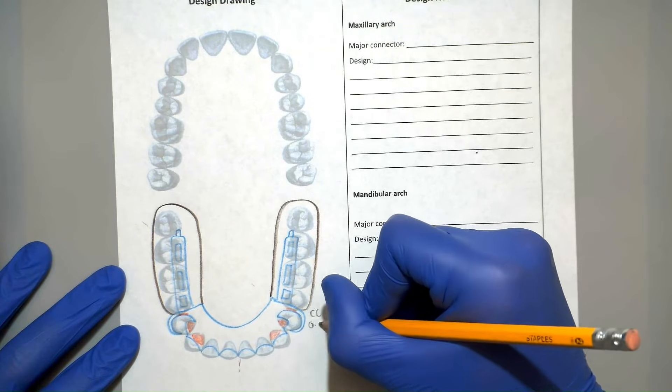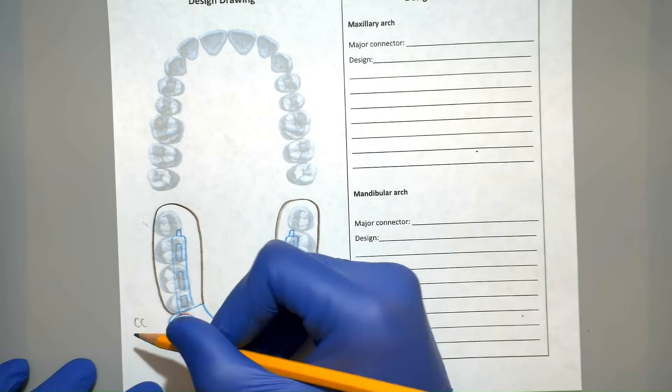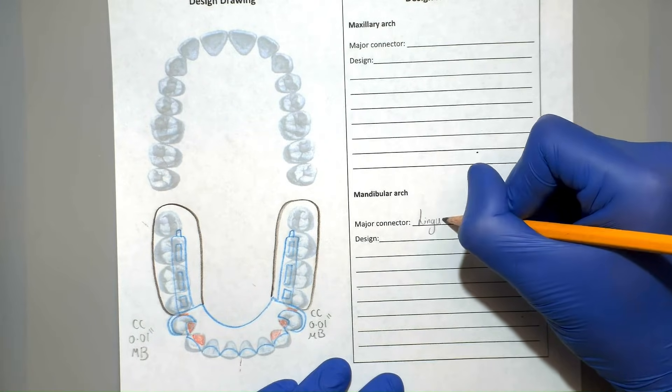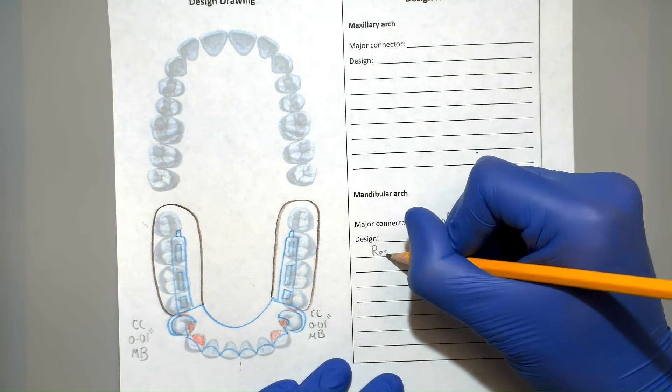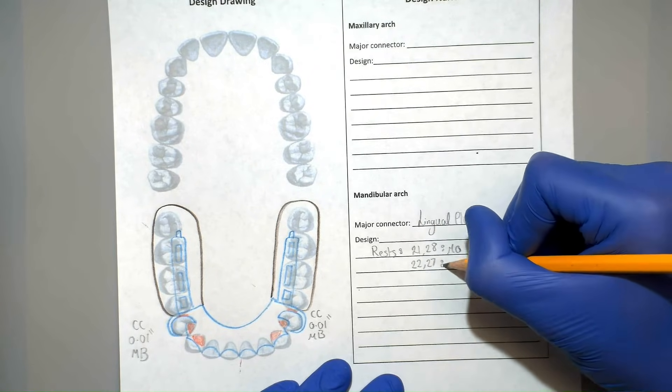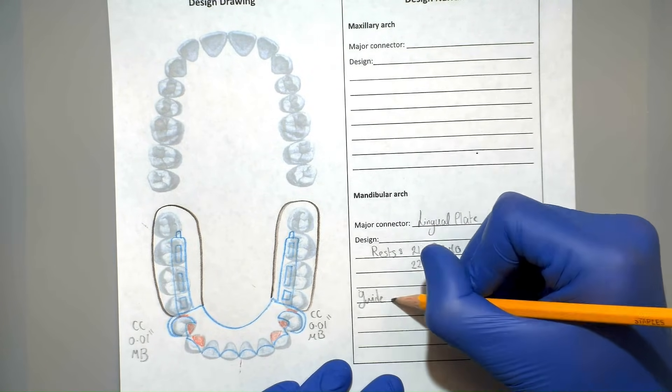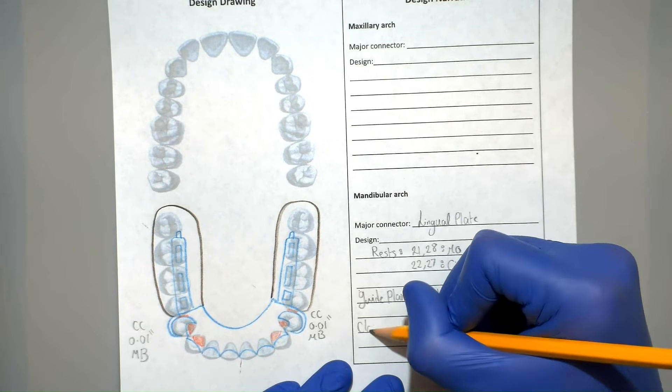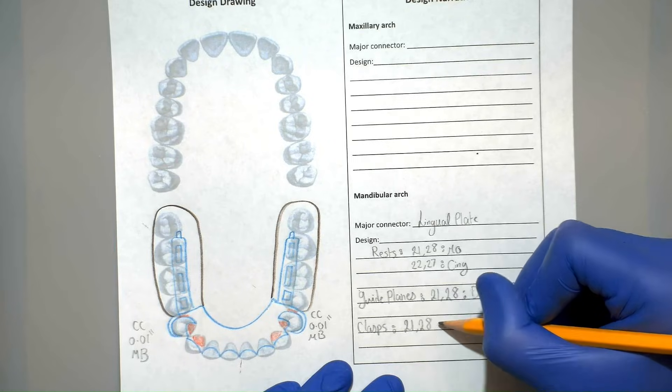We're almost done with the drawing. The only thing left is to write up some information about each clasp next to its drawing. This includes the name of the clasp and the undercut that it's engaging. It's sometimes recommended to add a bit more narrative including the type of major connector, the rests, guide planes, as well as clasps.